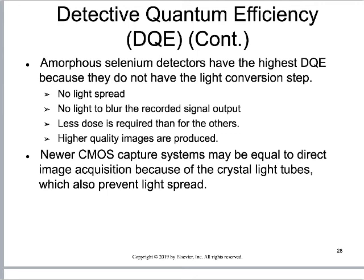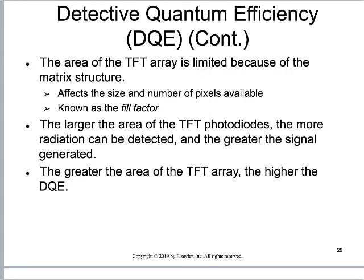Amorphous selenium detectors currently have the highest DQE because they do not have to convert things to light — these are the direct radiography systems, so there's no light spread, no blur, less dose, and higher quality images. The area of a TFT array is limited by the matrix structure, affecting the size and number of pixels available. This is sometimes referred to as a fill factor. The larger the area of the TFT photodiodes, the more radiation can be detected and the greater the signal generated — so the greater the area of a TFT array, the higher the DQE. As the TFT size increases, we can decrease the pixel size and increase the number of pixels without losing any information.